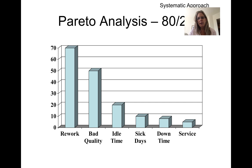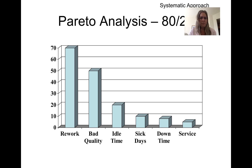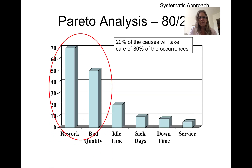A Pareto chart — many of you are familiar with the idea that the top 20 percent of causes or categories account for 80 percent of the effects. This is a really good way of narrowing down what an industrial engineer needs to look at — the things causing the most issues in your analysis.